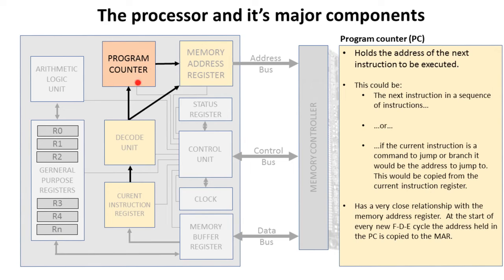The program counter is really vital — it holds the address in memory of where the next location to be executed is stored. This could be the next instruction in a sequence of instructions, or, if the current instruction is a command to jump or branch, it would be the address that you need to jump to.